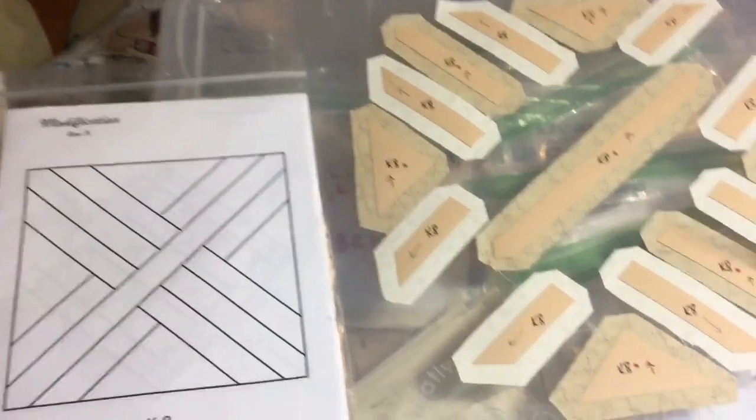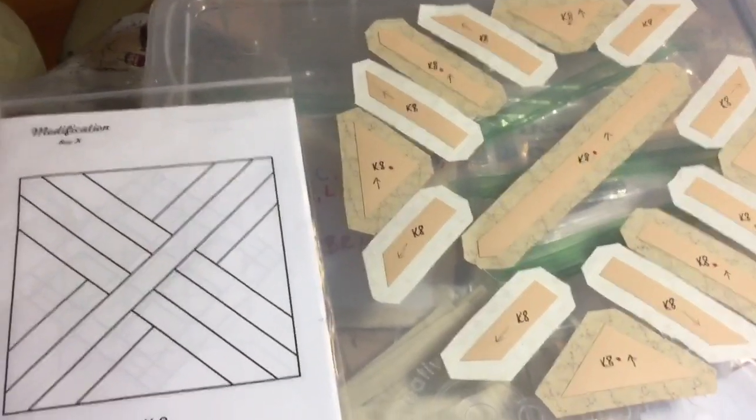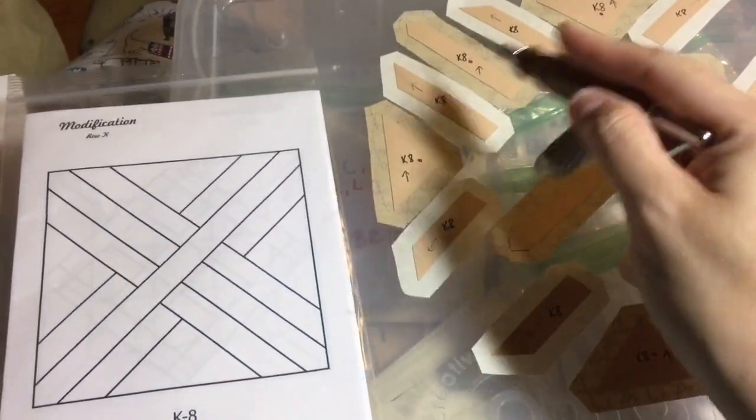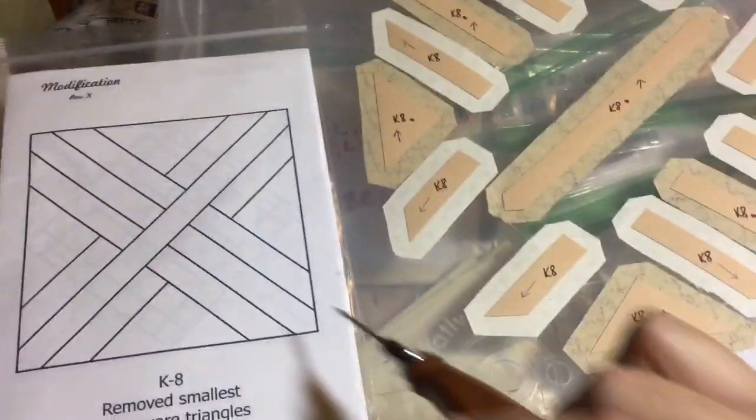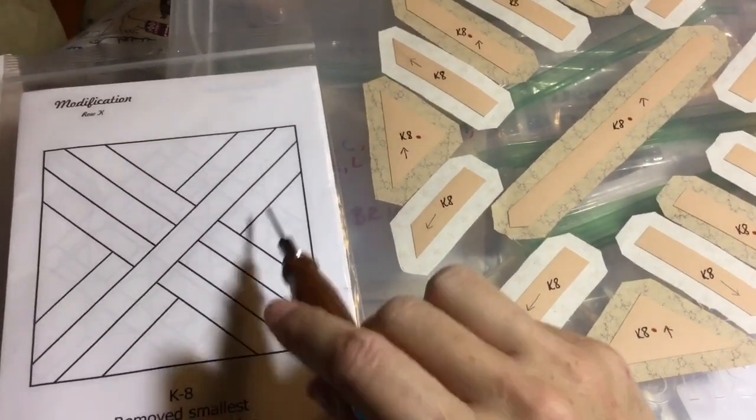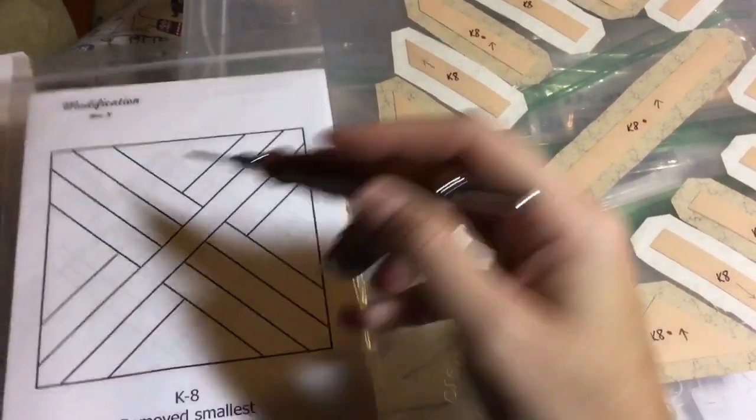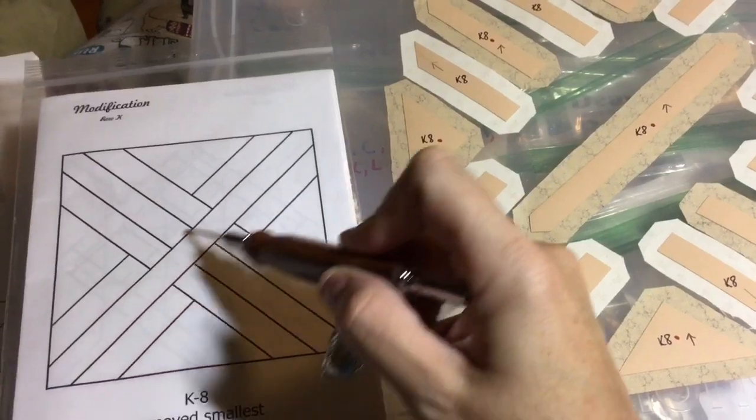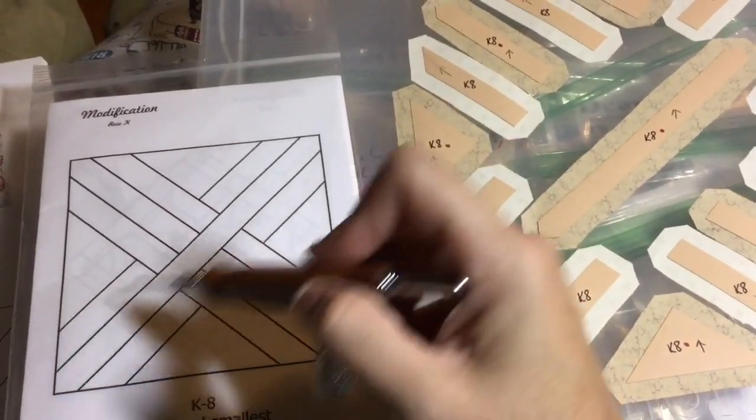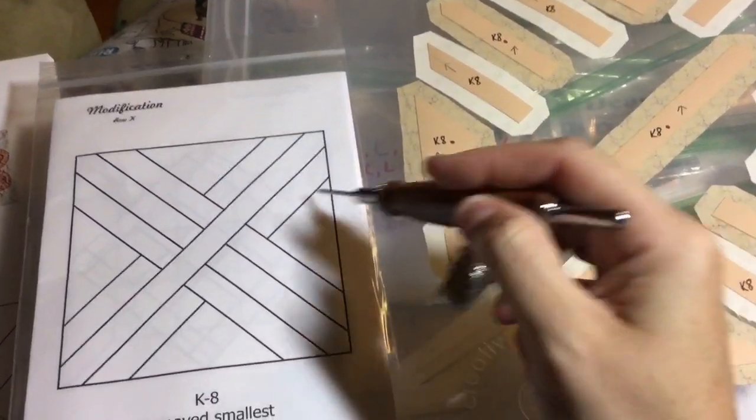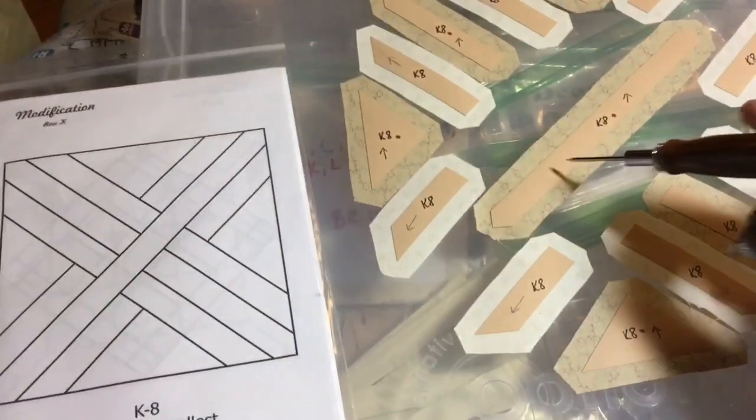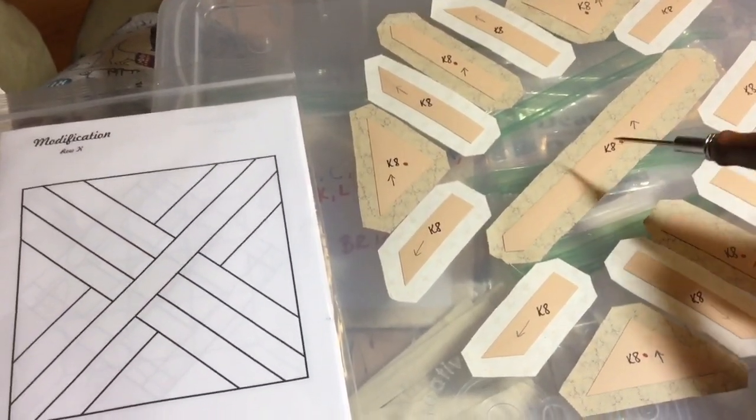The first thing I'm going to do is assemble these three pieces as a unit. Same thing on the other side. Then I'm going to attach these two pieces to make these units, and then it's a matter of assembling this unit to this one to this one, making a row on point, doing the same thing over here, and then attaching it to that center piece. So the center piece is going to be absolutely last.